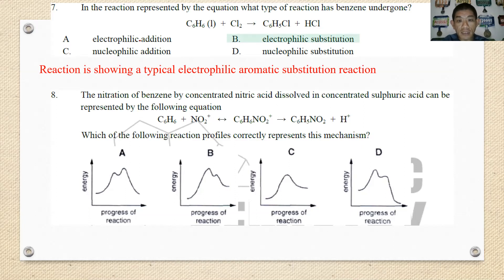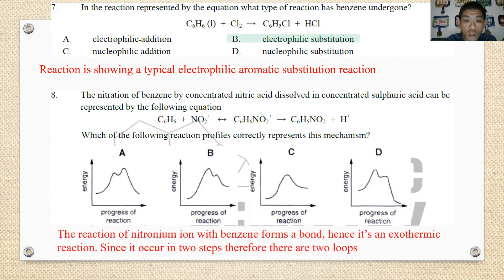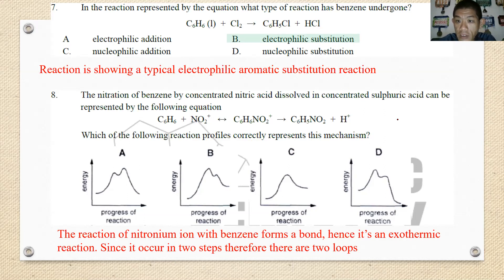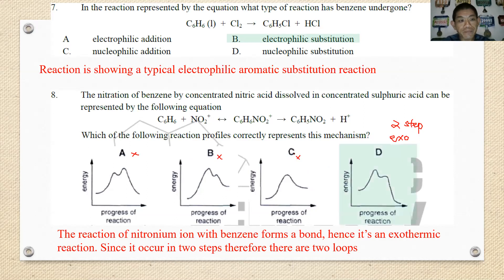Number eight: the nitration of benzene by concentrated nitric acid dissolved in concentrated sulfuric acid. Benzene reacts with the nitronium ion to form a nitronium benzene intermediate, and finally nitrobenzene. This is a two-step reaction and it is exothermic. Choices A, B, and C are endothermic, which are wrong. The best answer is D.